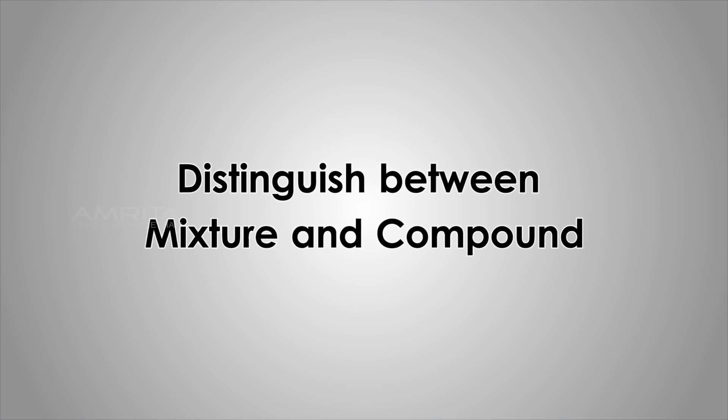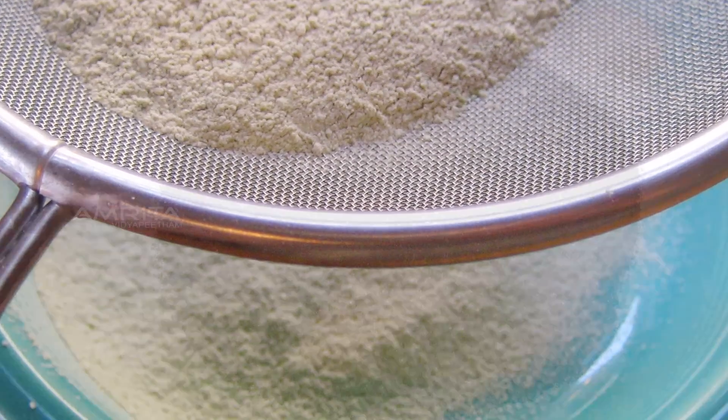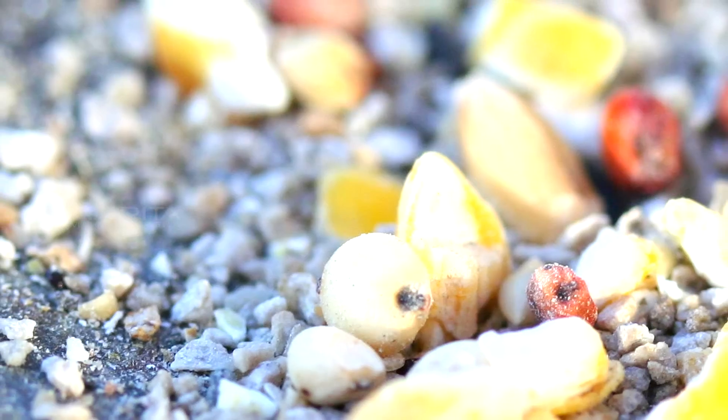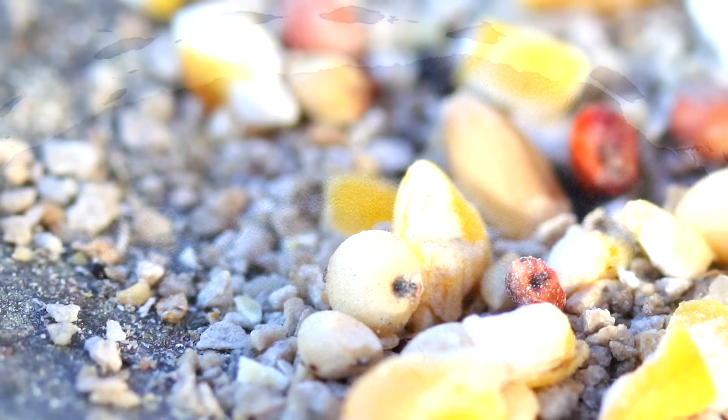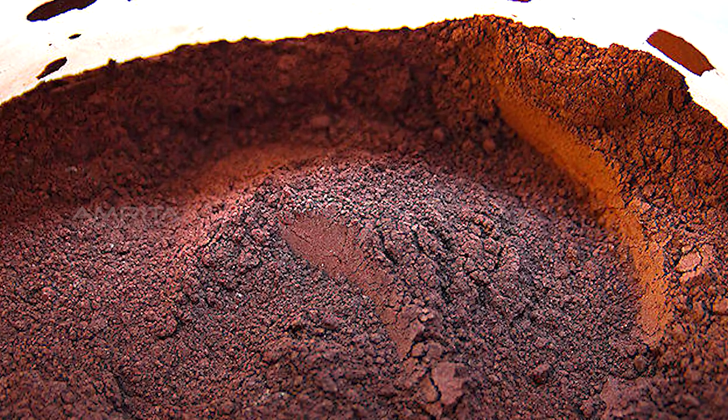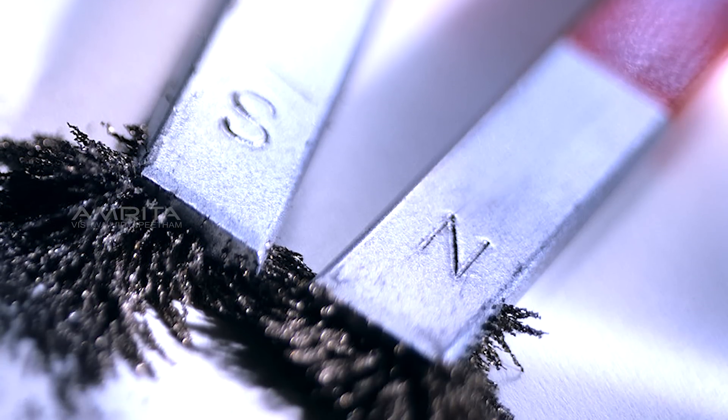Distinguish between Mixture and Compound. As we look around, we can see that most of the matter around us exists as mixtures of two or more components. A mixture is obtained by mixing two or more substances in any proportion and it shows the properties of the constituent substances. These constituents can be separated easily by physical methods.